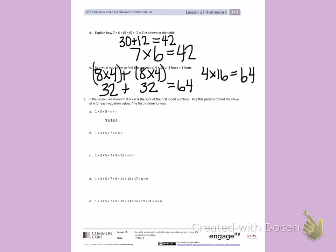Number 2. In the lesson, we found that n times n, so the same two numbers, is the sum of the first n odd numbers. Use the pattern to find the value of n for each equation below. The first is done for you. So letter A. 1 plus 3 plus 5 equals 9. Two numbers that equal 9 when you multiply them together are 3 times 3.